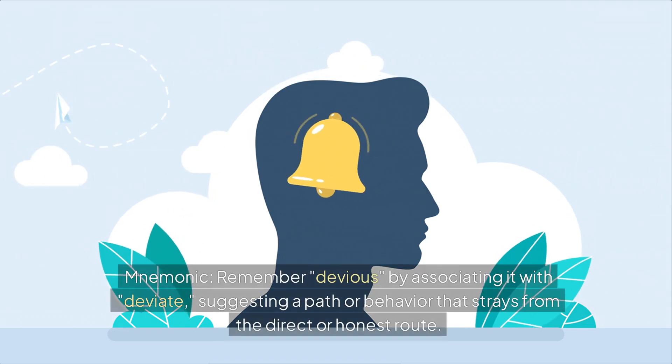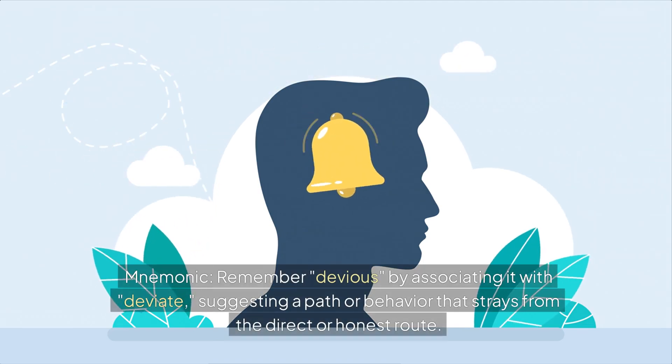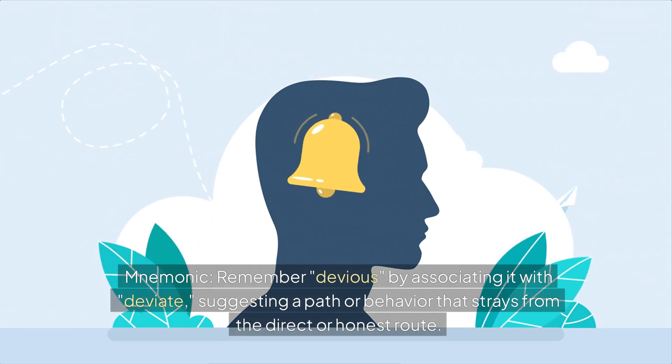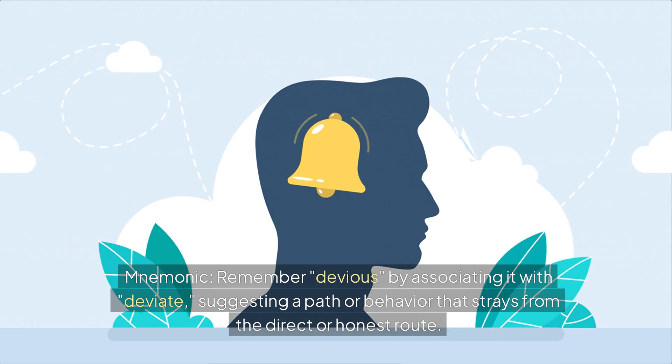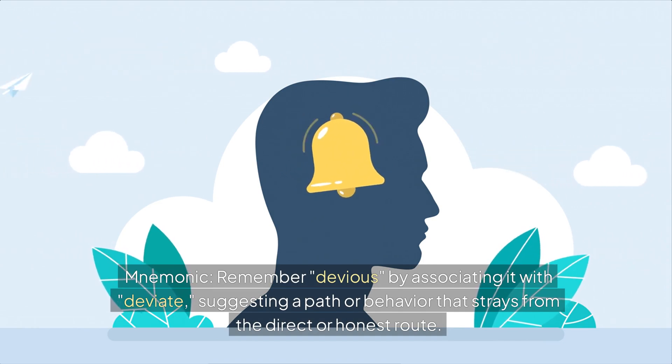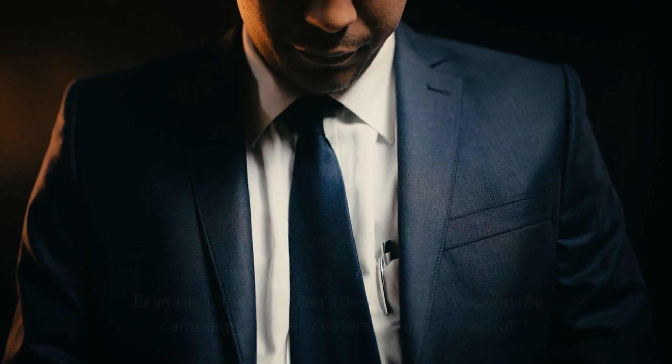Mnemonic: remember devious by associating it with deviate, suggesting a path or behavior that strays from the direct or honest route.